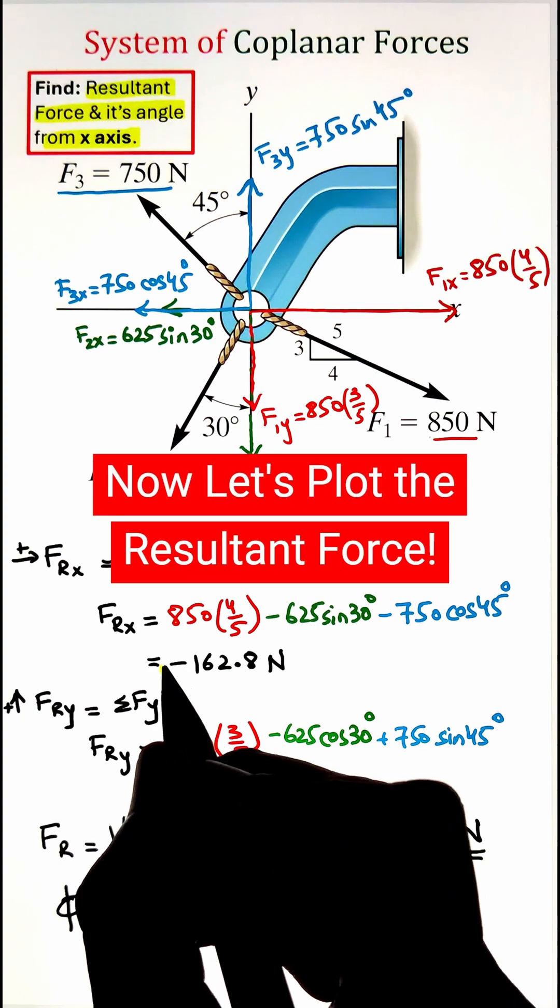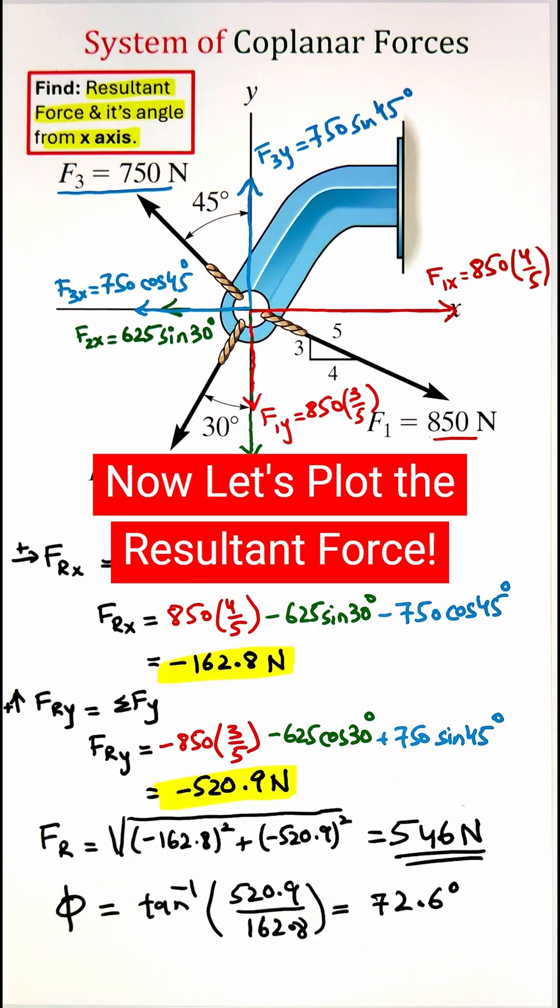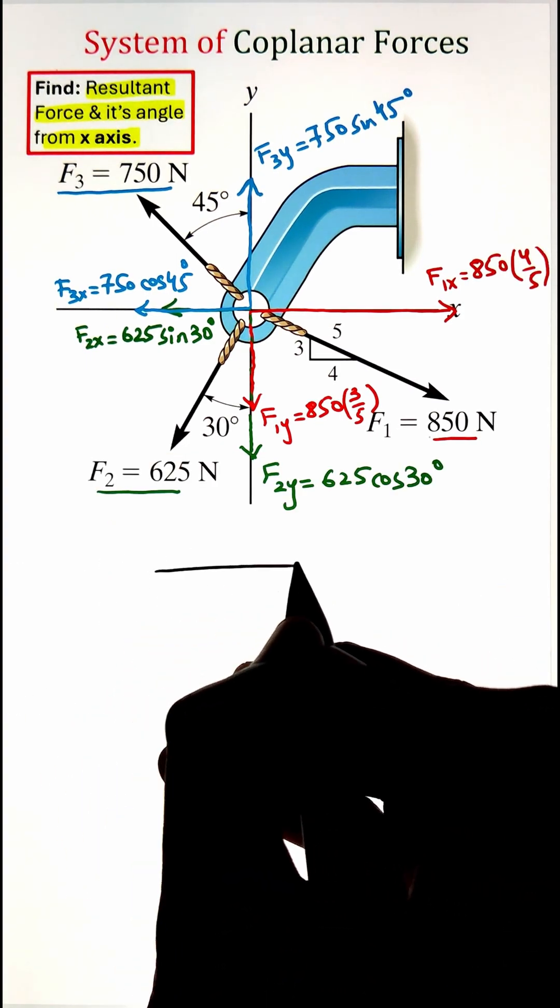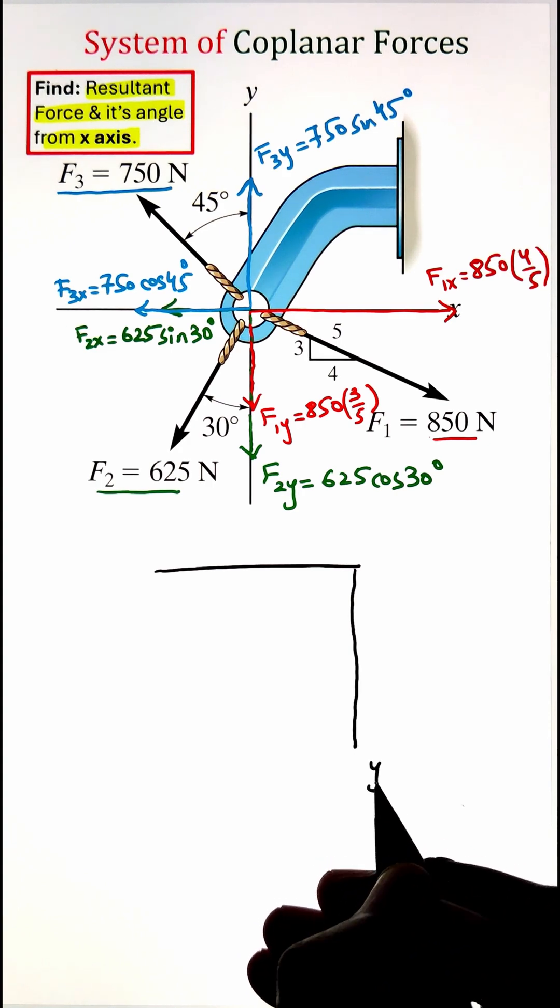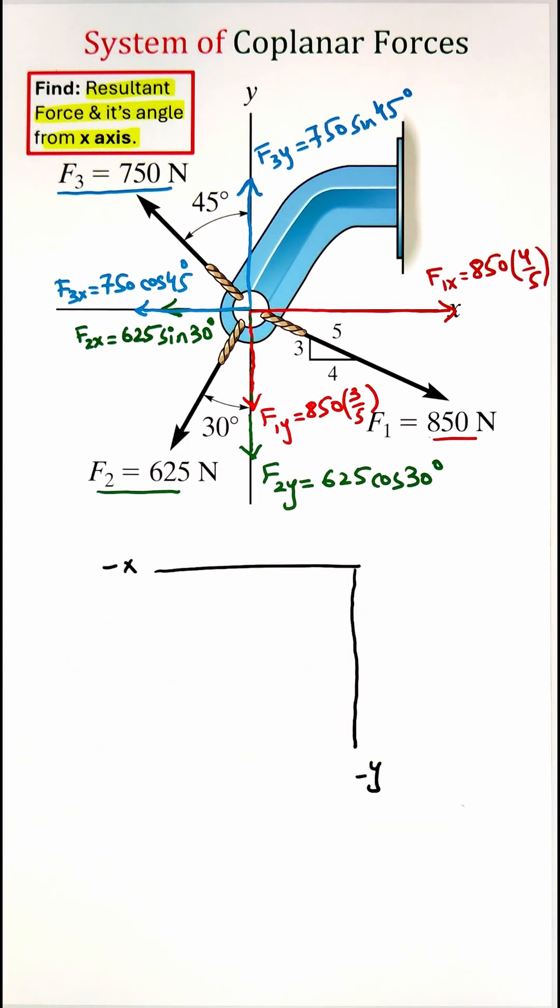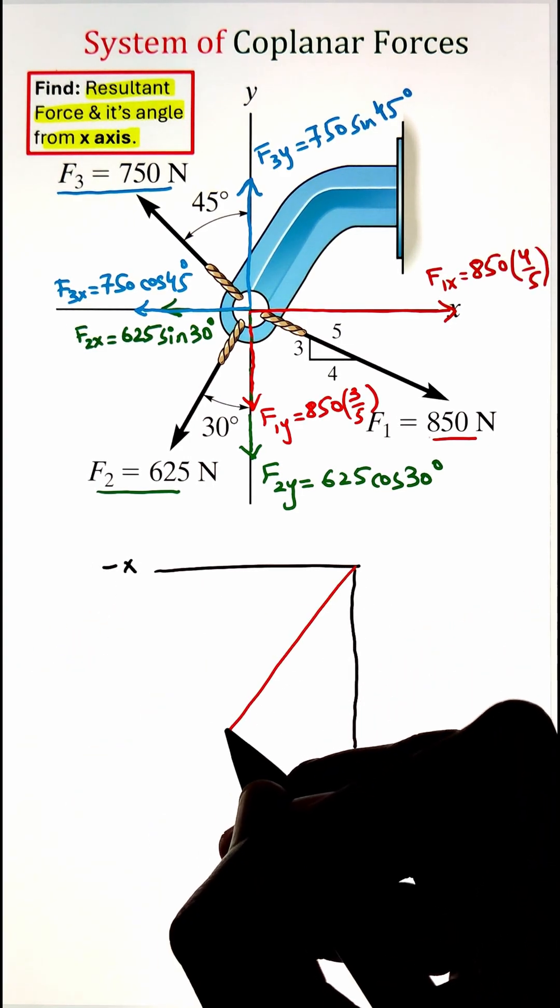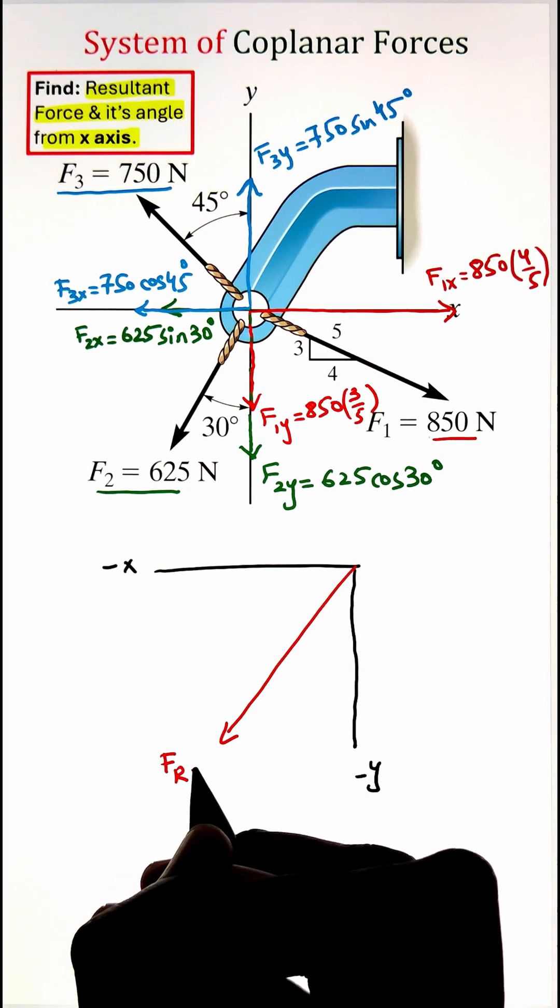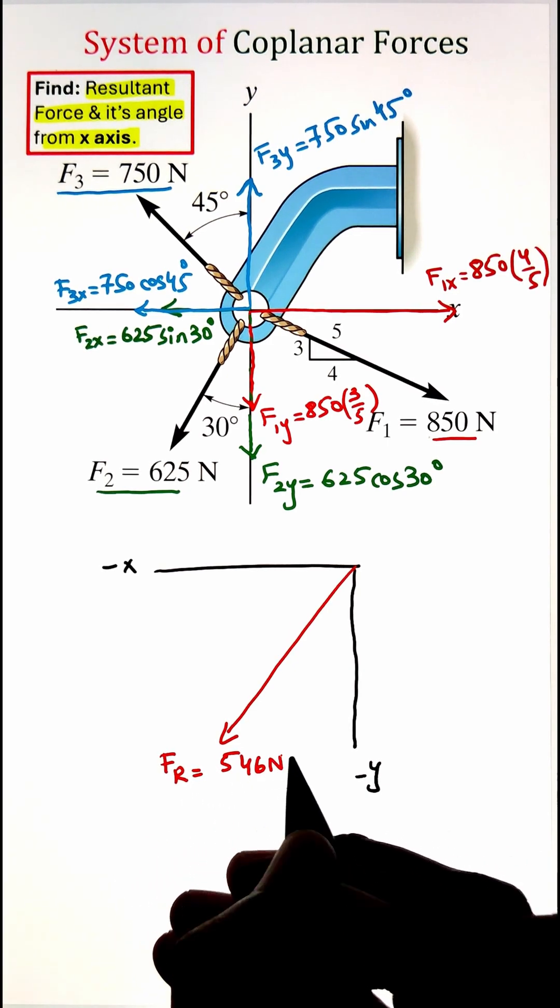Now, once we have the force and the angle, let's go ahead and plot the resultant force. Here, the force Fx and Fy are both negative, meaning that they are in the third quadrant and the angle 72.6 degrees is measured from the negative x-axis.